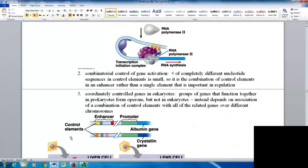Coordinately controlled genes in eukaryotes are groups of genes that function together, similar to operons in prokaryotes. But in eukaryotes they aren't located close together, so instead they depend on an association of the combination of control elements with all related genes located over different chromosomes.